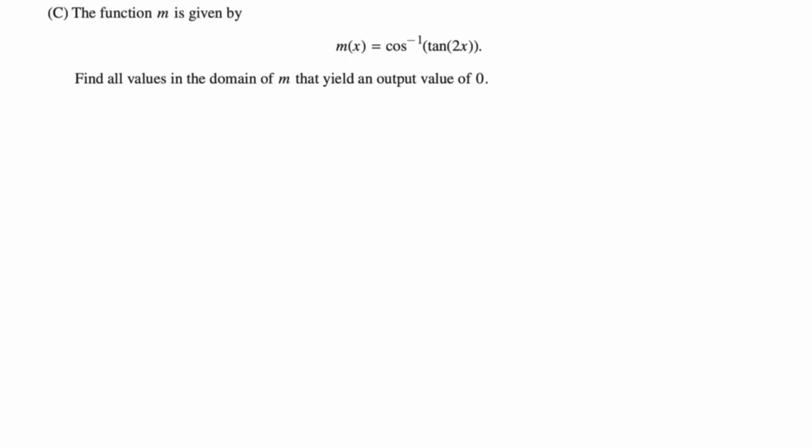So I'm going to start off with just a restatement of what we're doing. We're trying to find where m(x) is equal to 0. m(x) is this cosine inverse of tan of 2x equals 0. I'm going to take the cosine of both sides to get rid of that cosine inverse. That's how I like to deal with those. Just get rid of them. So cosine of both sides gives us the tan of 2x is the cosine of 0. Cosine of 0 is 1. So now we have the tan of 2x is equal to 1.